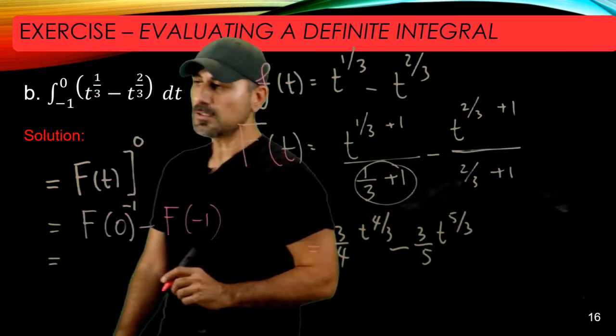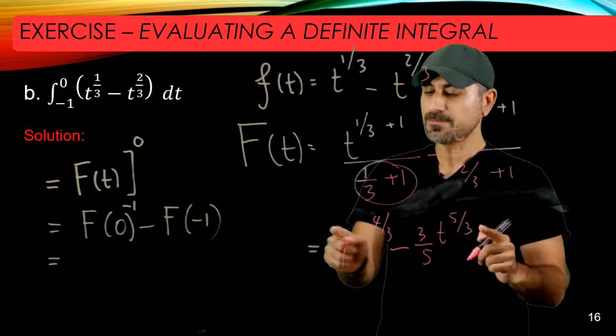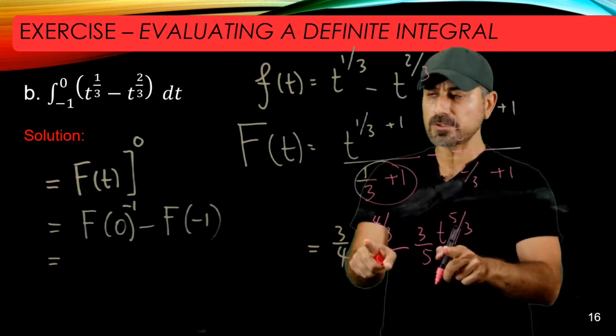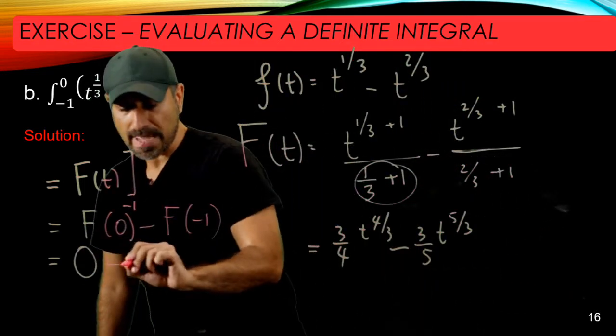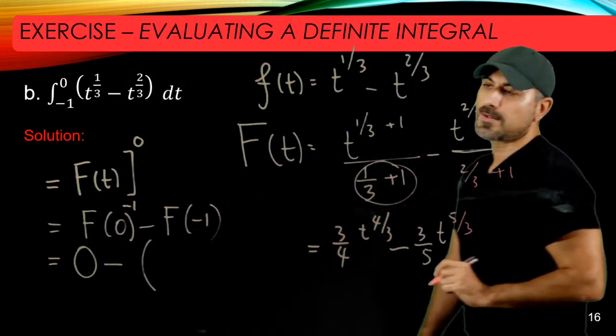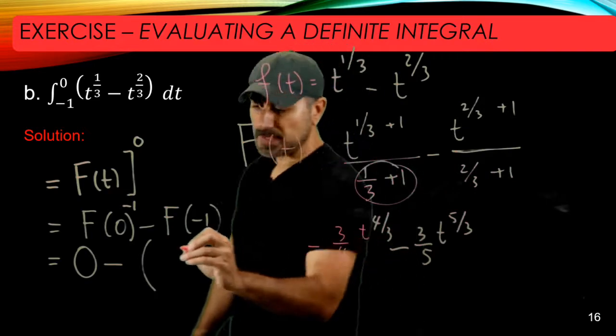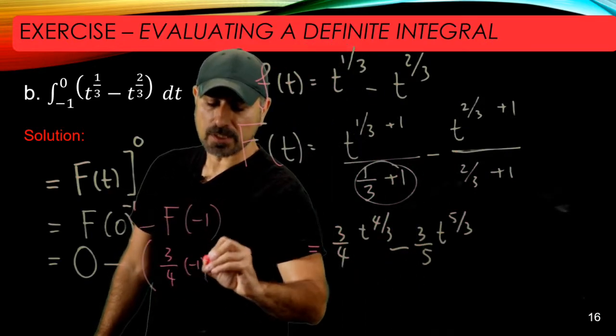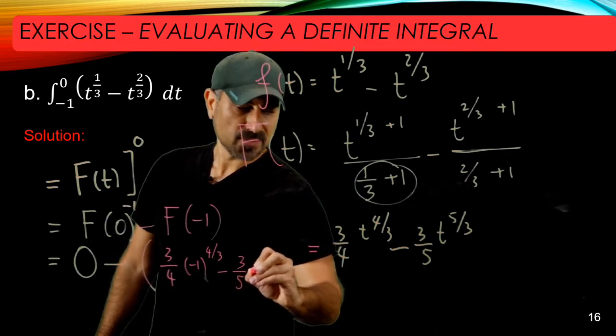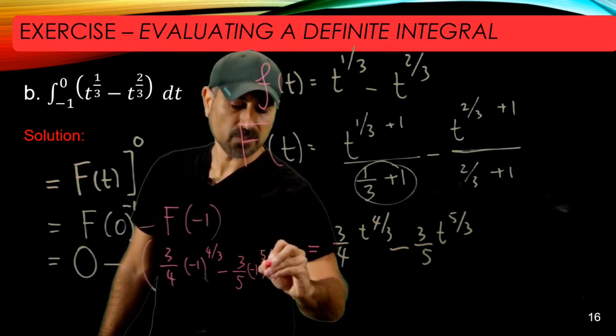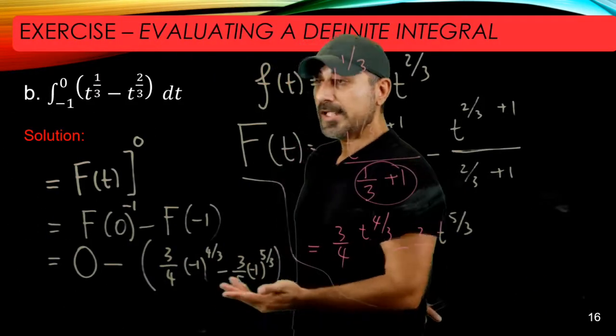The next thing is just function evaluation. When t equals 0 in the expression of F, you have 0 here, so that spits out 0. Now we're going to evaluate the same function at t equals -1. This becomes 3/4 times (-1) to the power of 4/3 minus 3/5 times (-1) to the power of 5/3.